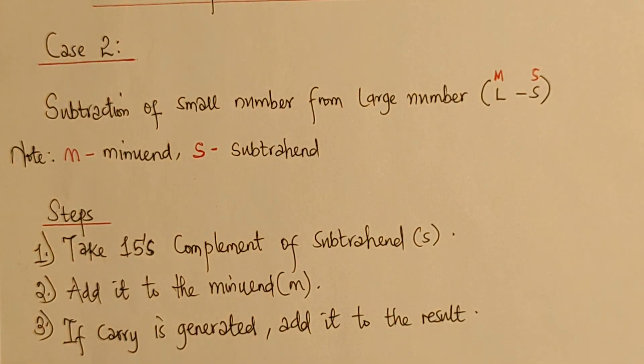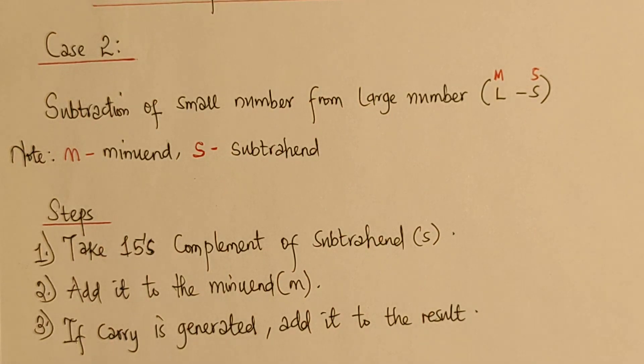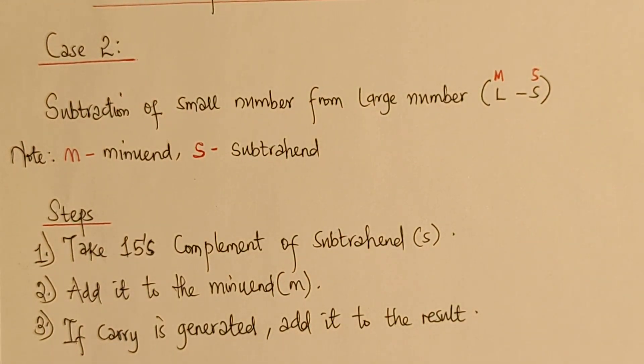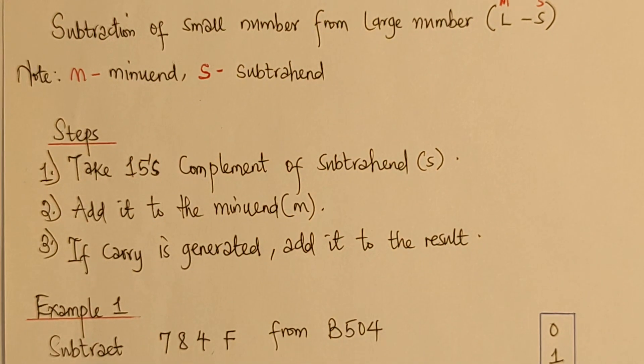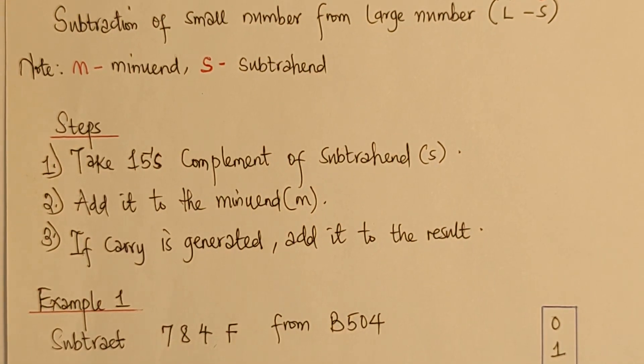Now, our step 3 is to check if carry is generated, then we add it to the result. Now, for you to better understand this, let's go with example 1. Now, for this example 1, we are going to subtract 784F from B504.